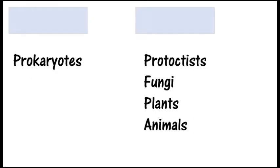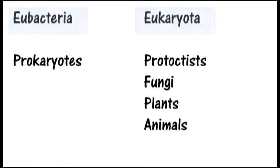I mentioned that I had hidden something at the top of the chart, and now it's time for the big reveal. Sitting above the five kingdoms is the taxon of domain. The domain of Eukaryota contains four of the kingdoms: Protoctista, fungi, plants and animals. And the last domain, Eubacteria, contains the single kingdom of bacteria. The distinction between these two domains is quite simple but also subcellular — something that Carl Linnaeus would never have known.